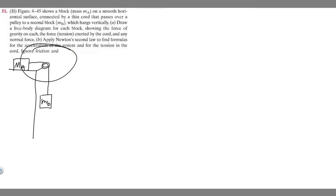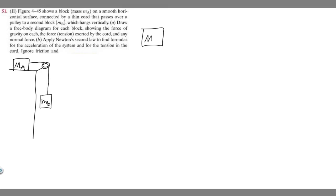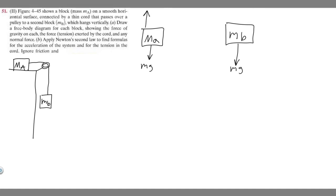Let's go ahead and do this. Here's our drawing. What we want to do first is draw a free body diagram for each block — M sub A and M sub B. Both of these blocks are going to have the force of weight, which is just M times G. We also have the normal force acting on M sub A because it's on a surface. That surface is going to be exerting a force upwards, which I'll call F sub N. M sub B doesn't have a normal force because it's just in the air.